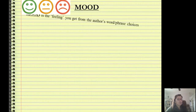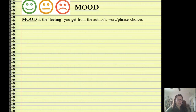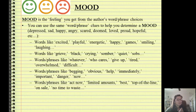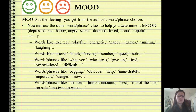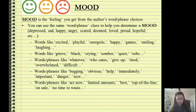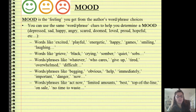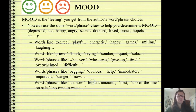Mood — happy, sad, confused, don't care — is a feeling you get from the author's word and phrase choices. You can use the same word or phrase clues to help determine a mood: depressed, happy, sad, angry, scared — all those things create a mood and are purposely chosen by the author. Words like excited, playful, energetic create an upbeat mood. Words like grief, black crying, somber, quiet sobs create a very dark mood. Always look at the way the setting is described — that helps create a mood. Look at how people are described too. Pay attention to the words.